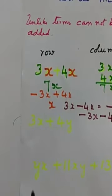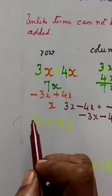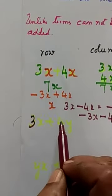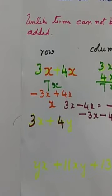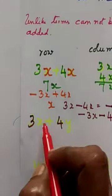They have given you to add 3x and 4y. Both are unlike sign, isn't it? Both have unlike sign. Not sign, very sorry.